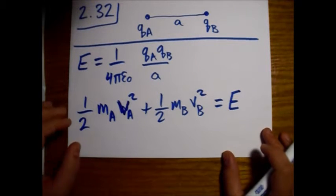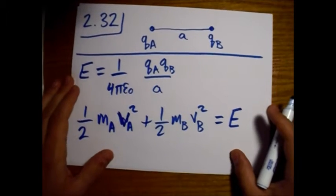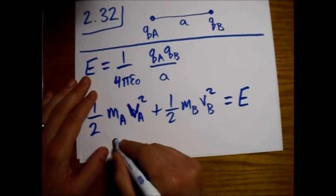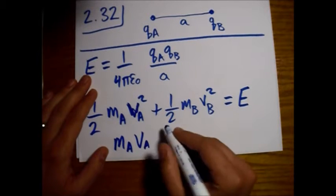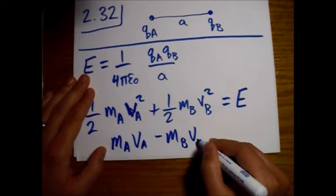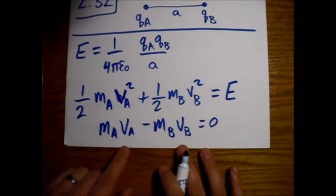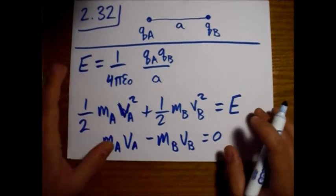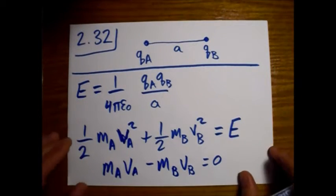Our two best friends in any situation like this are conservation of energy and conservation of momentum. Writing conservation of momentum in terms of speed rather than velocity: M_A V_A minus M_B V_B equals zero. The minus sign comes because they're going in two different directions.